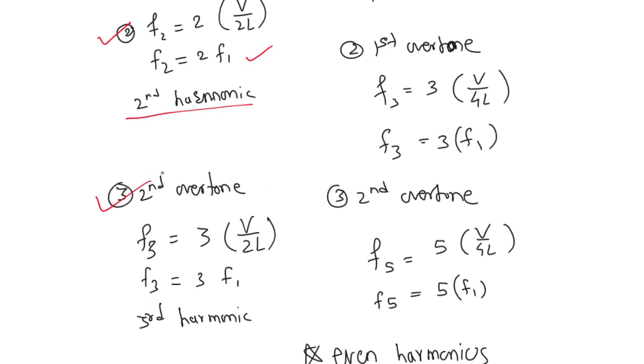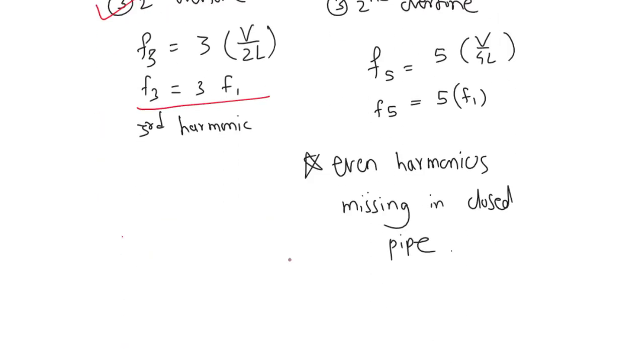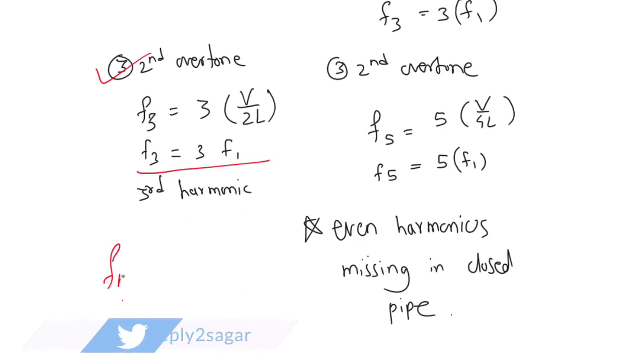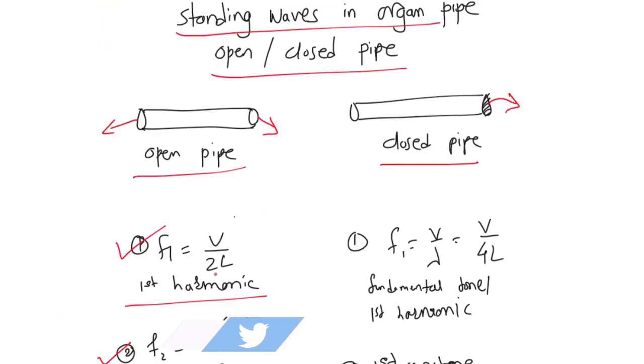The second overtone, or third harmonic, is f3 = 3f1, and so on. We can write fn = nf1, which is applicable for the open pipe.